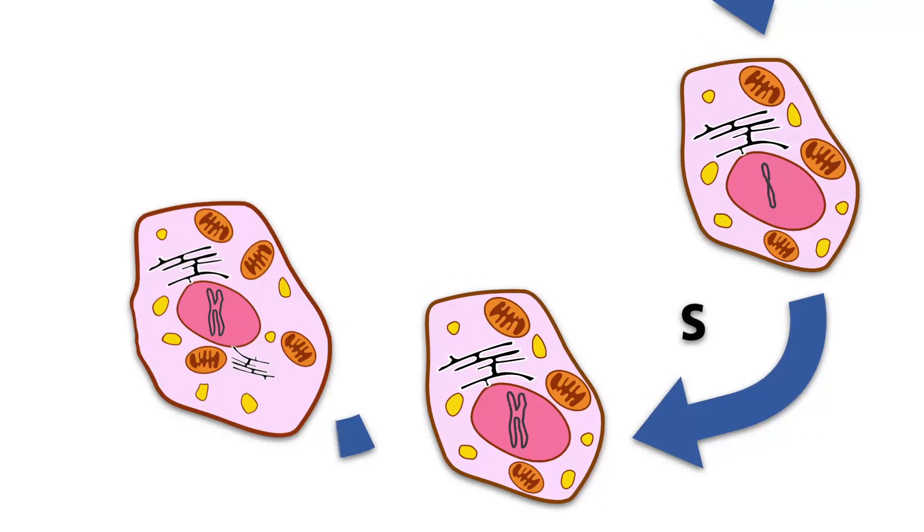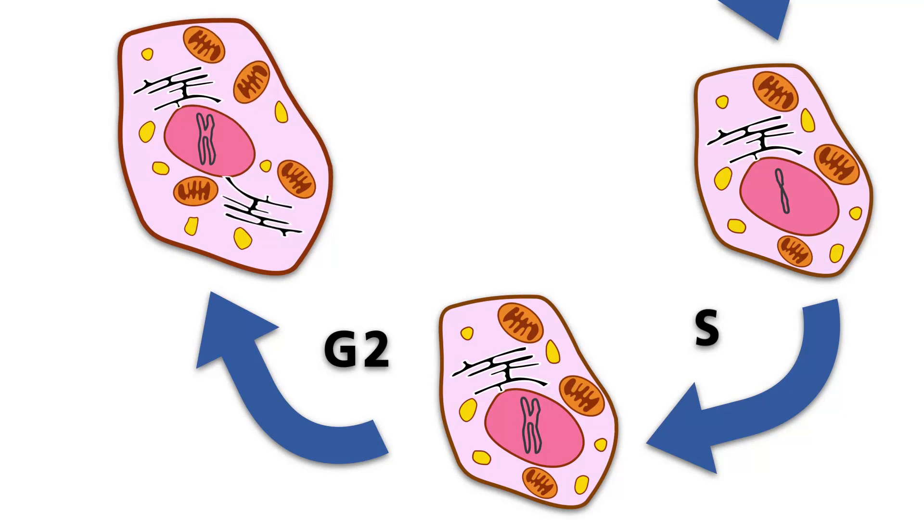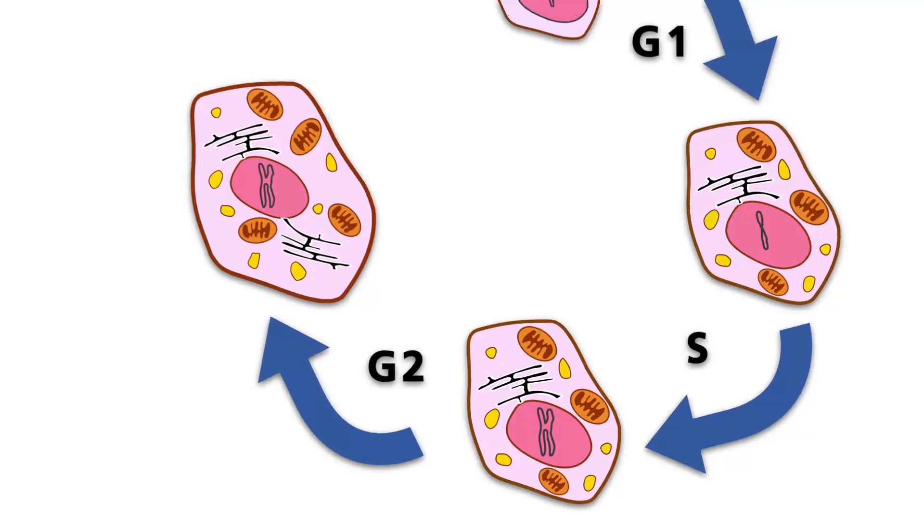While it continues to grow, the cell produces the proteins necessary for mitosis. The G2 phase ends with the beginning of the condensation of the DNA.